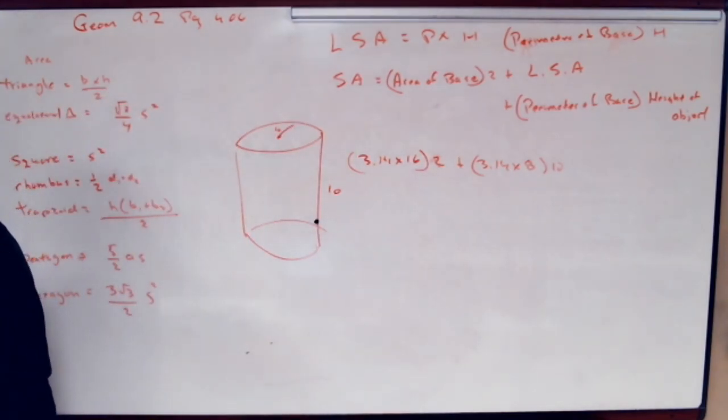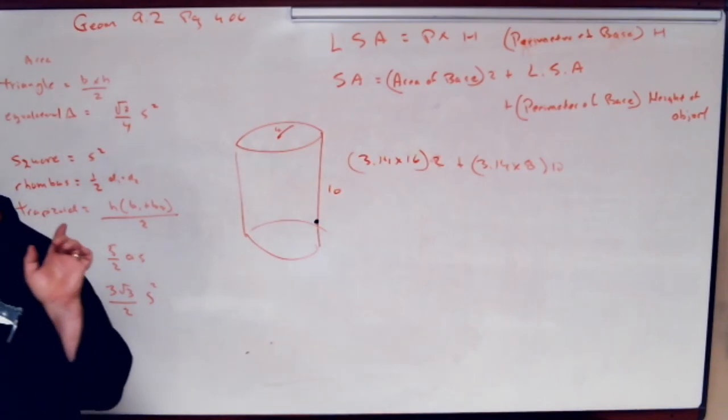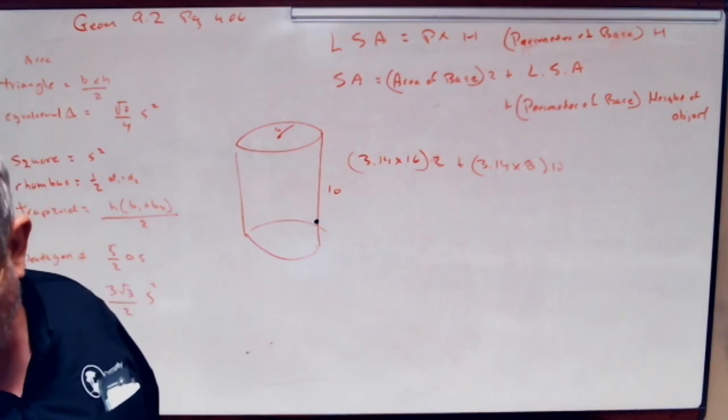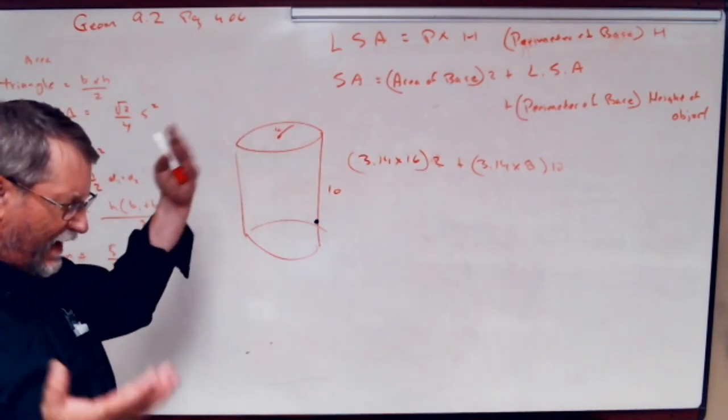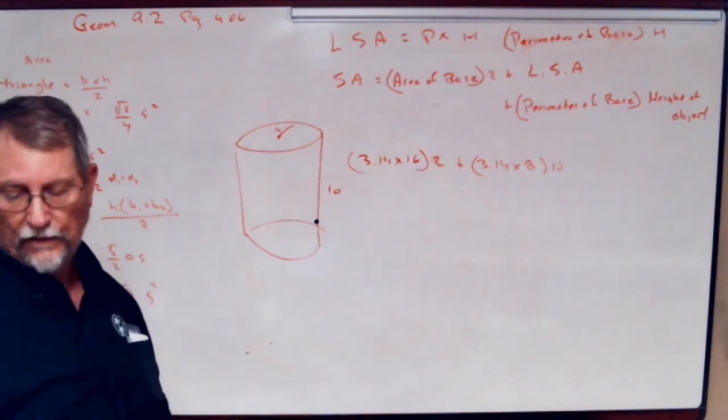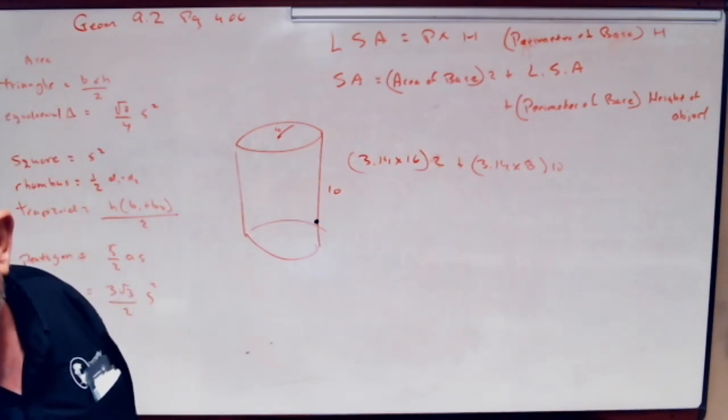All you got to do on here is one through fourteen. Just watch your numbers. Make sure you're doing the right one. And watch this. On some of these, they're going to ask for lateral surface area and then the entire surface area. That's called two answers.